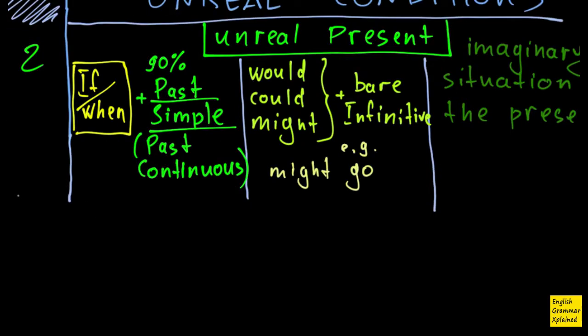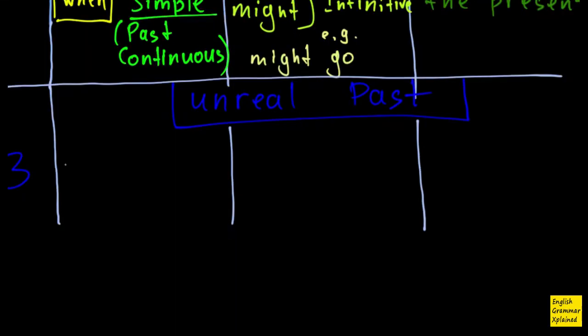Okay, and what about number three, or third type of condition, or type three, if you will? Type three is all about unreal past. That's unreal past. And here, in the if-clause, of course I have if, or when. And then, after this, I use past perfect. Of course, I can use past perfect continuous as an alternative, if I want to talk about some process, about some long action, or whatever.